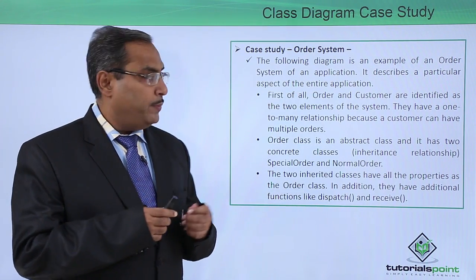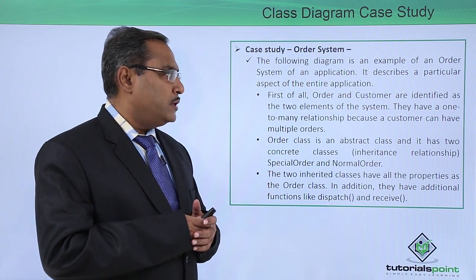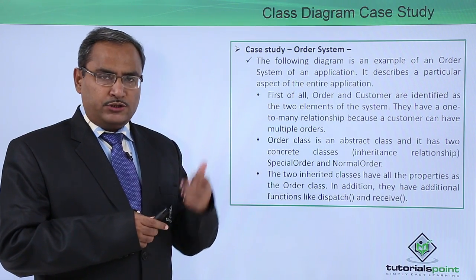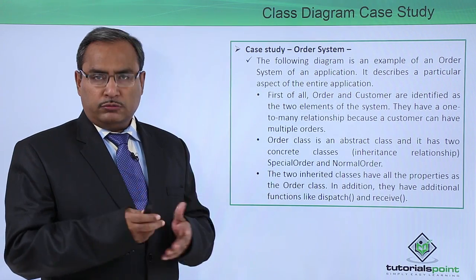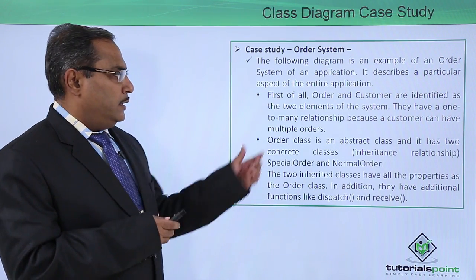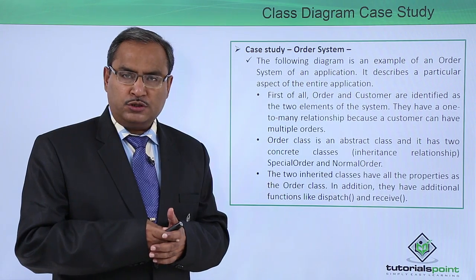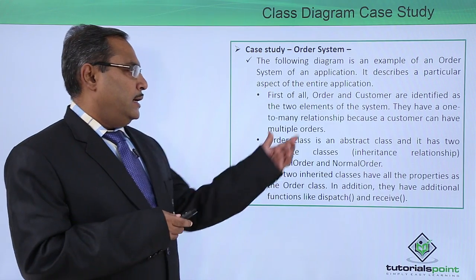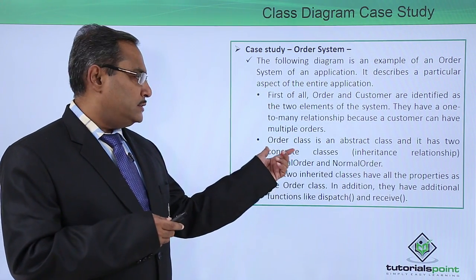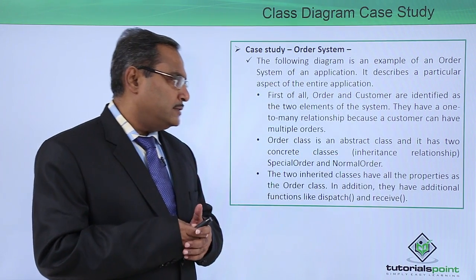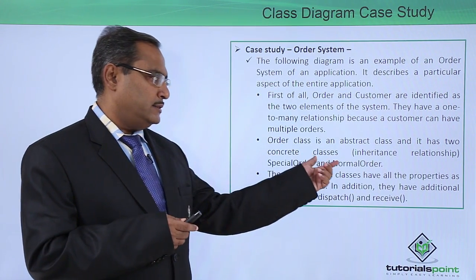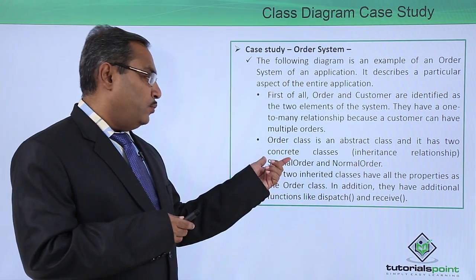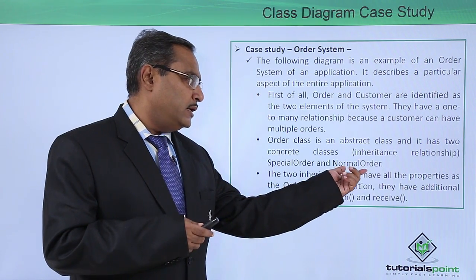The features we are going to implement: first, Order and Customer are identified as the two elements of the system. Order will be invoked by the Customer. They have a one-to-many relationship because a customer can produce multiple orders. The Order class is an abstract class and it has two concrete classes through an inheritance (generalization) relationship — one is Special Order and another is Normal Order.